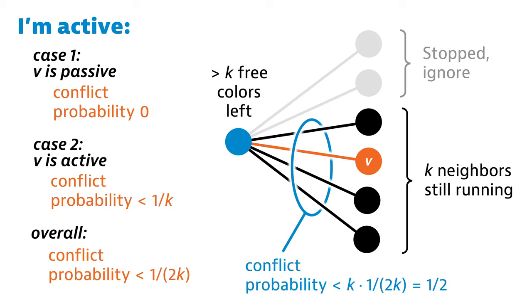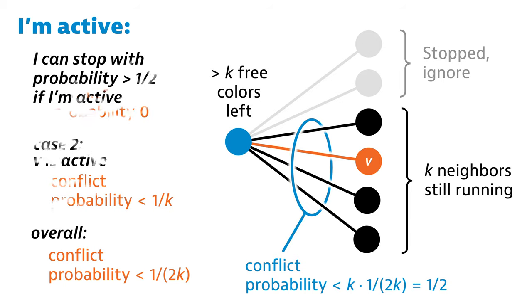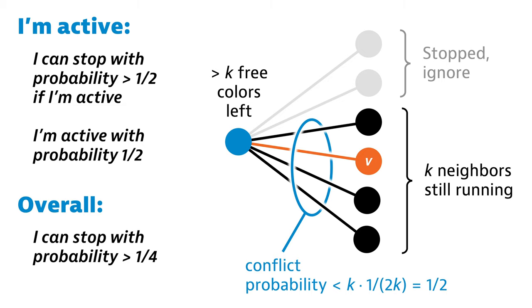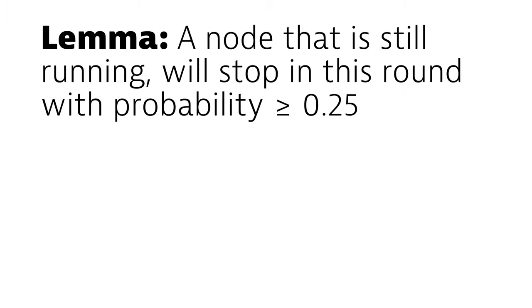So if I'm active, I'll have a conflict with probability less than 1/2. So I'll stop with probability more than 1/2. And I was active with probability 1/2, so overall I'll stop with probability more than 1/4. And this is exactly what we wanted to prove.